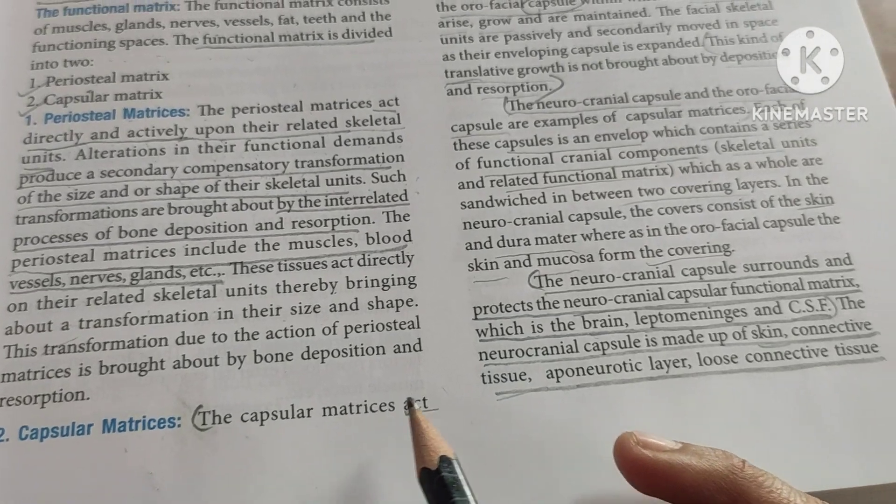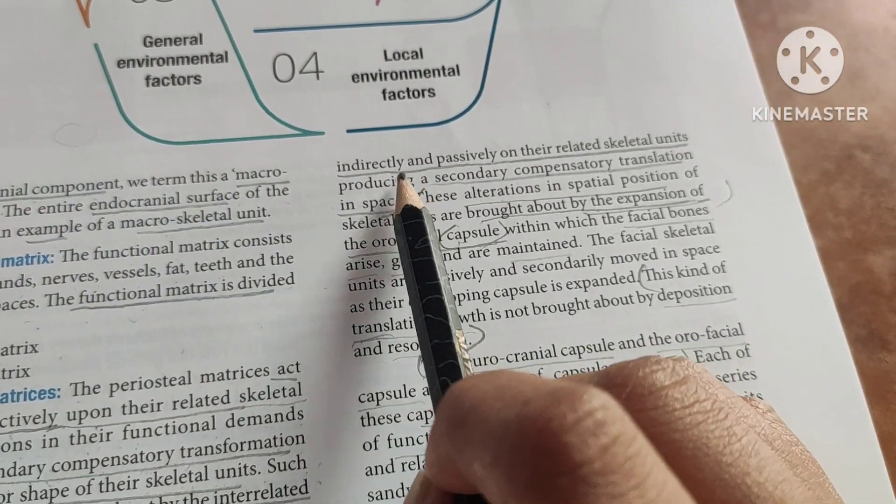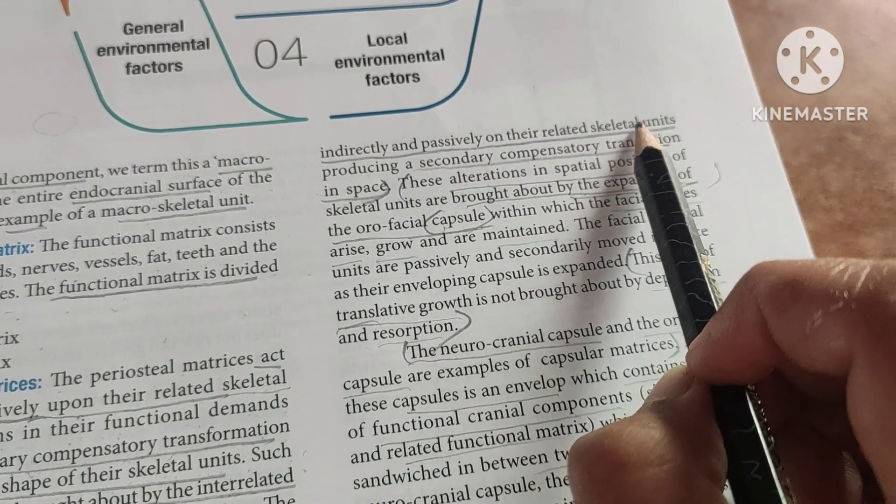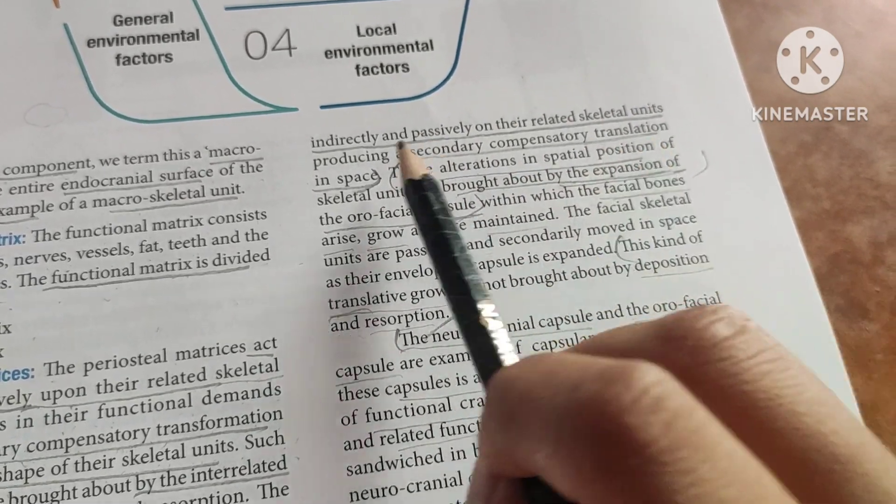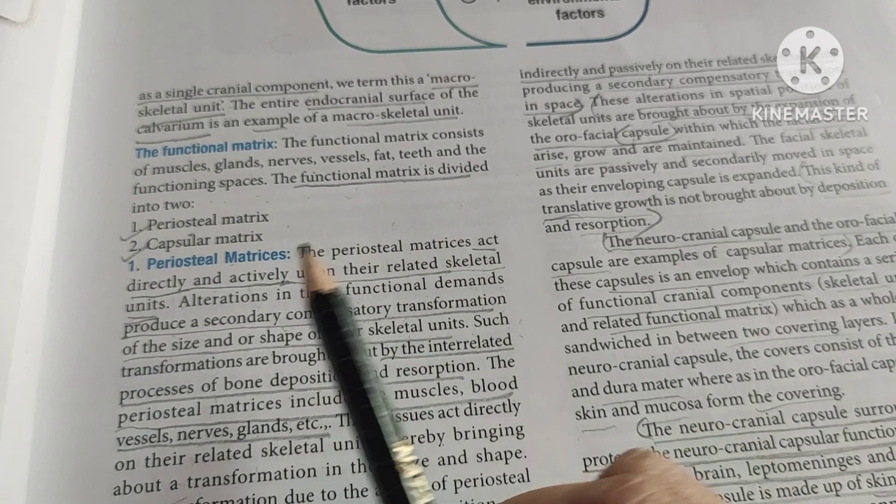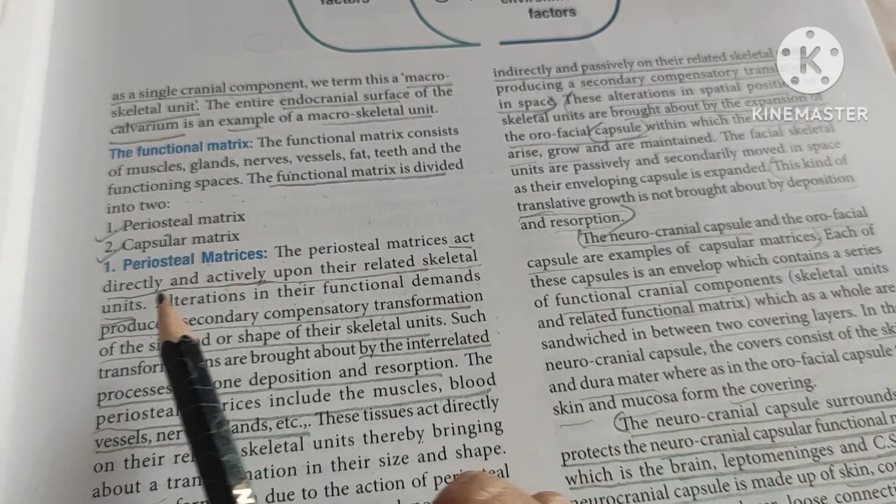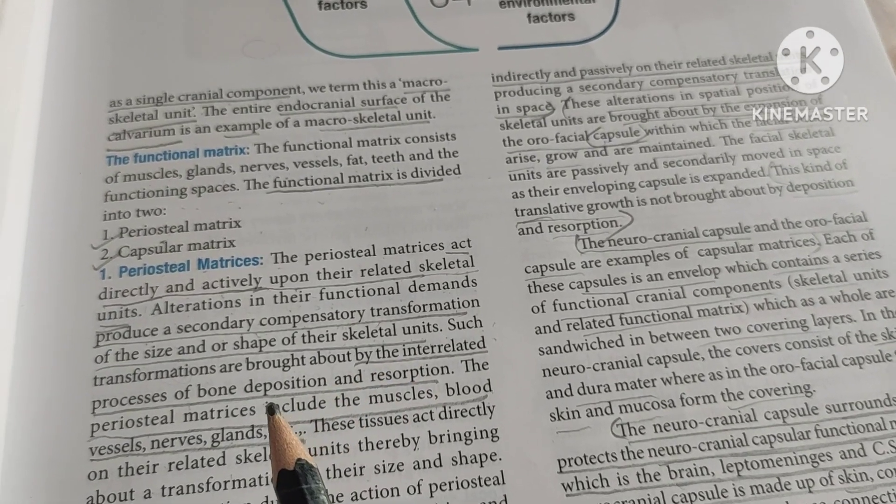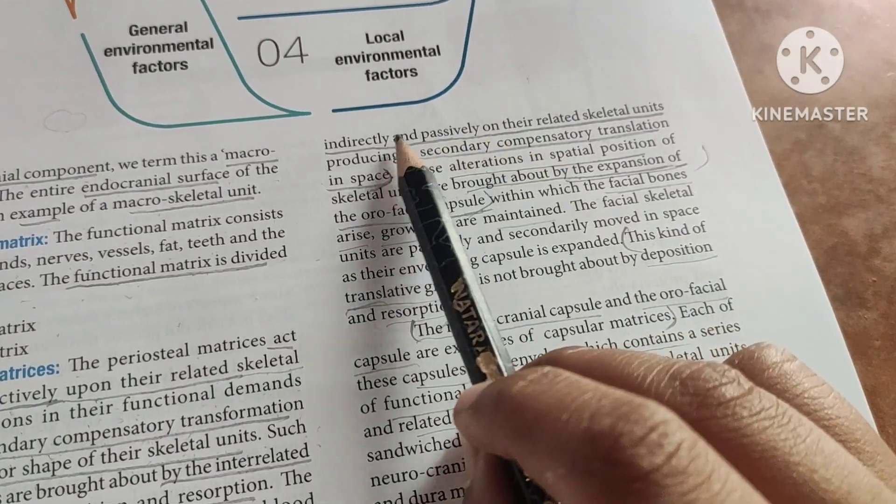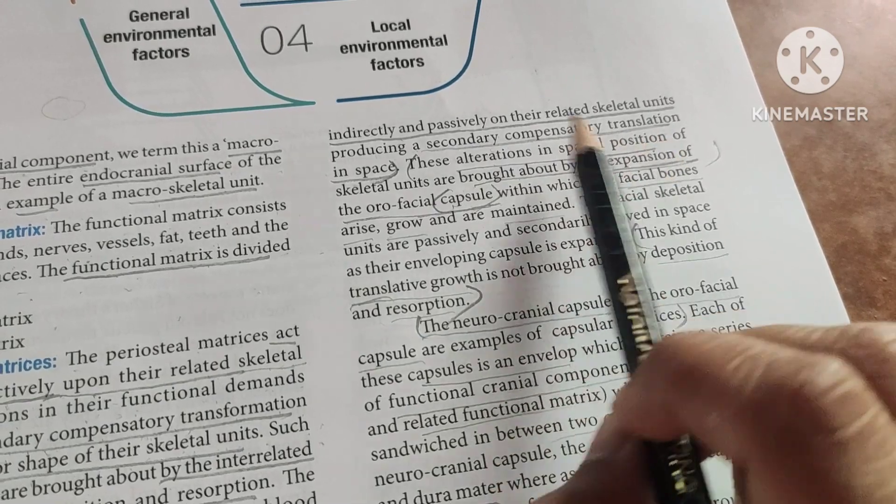The capsular matrix acts indirectly and passively on the related skeletal units, producing a secondary compensatory translation in space. It acts directly and produces transformation, whereas here it acts indirectly and causes translation.